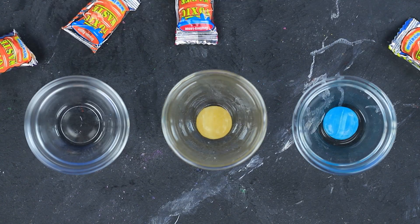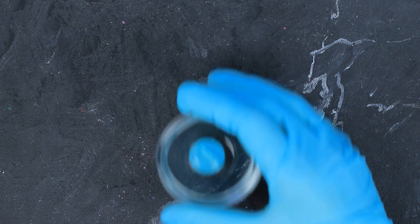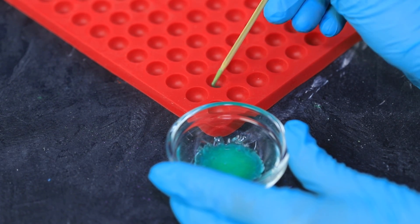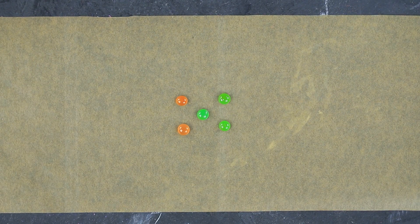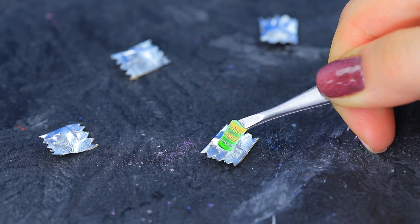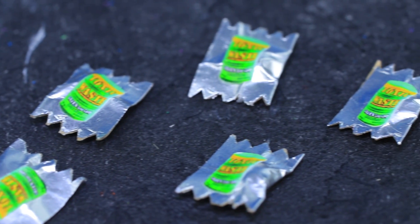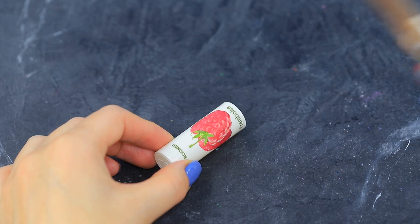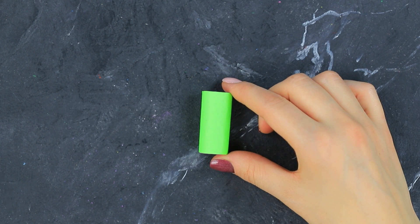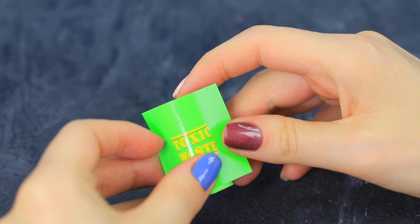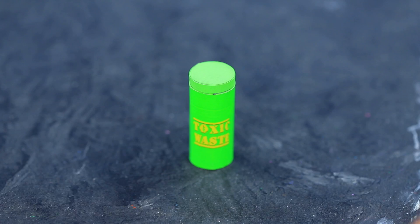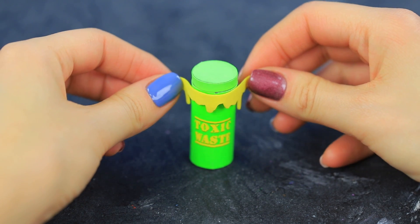Melt toxic waste candy in a microwave! Pour the melted mass into small round molds. Put the hardened candies onto a sheet of parchment paper. Wrap each candy in foil and attach a mini-label. Cut a lipstick cap. Wrap it in green paper. Attach a printed logo. Put in the miniature candy.